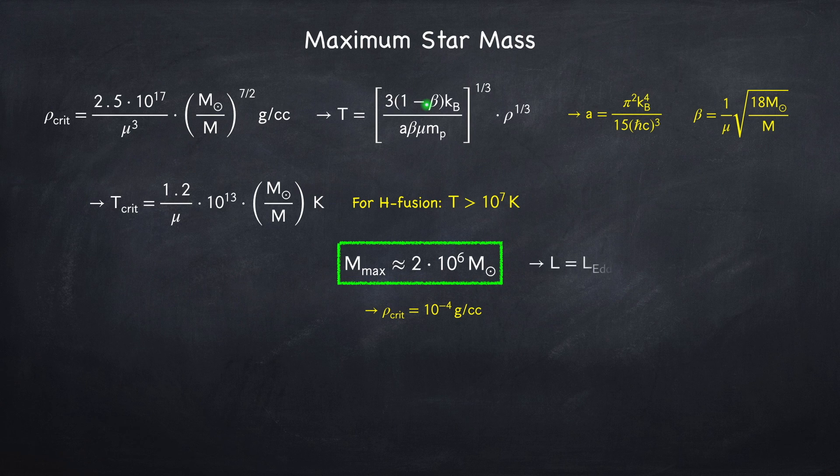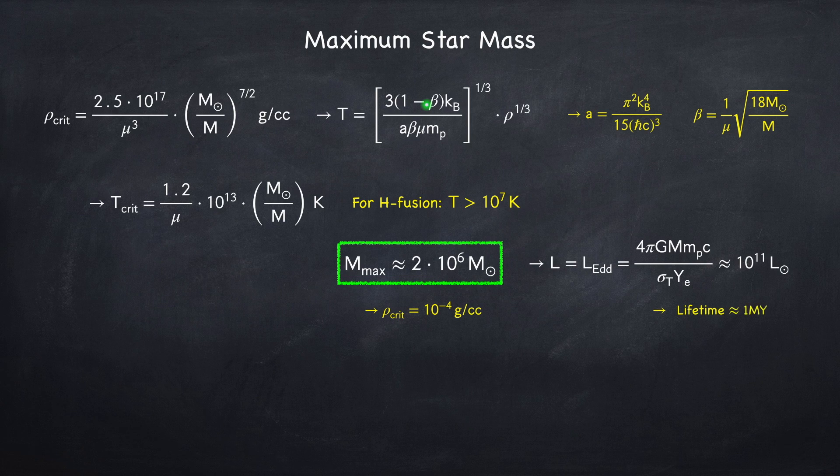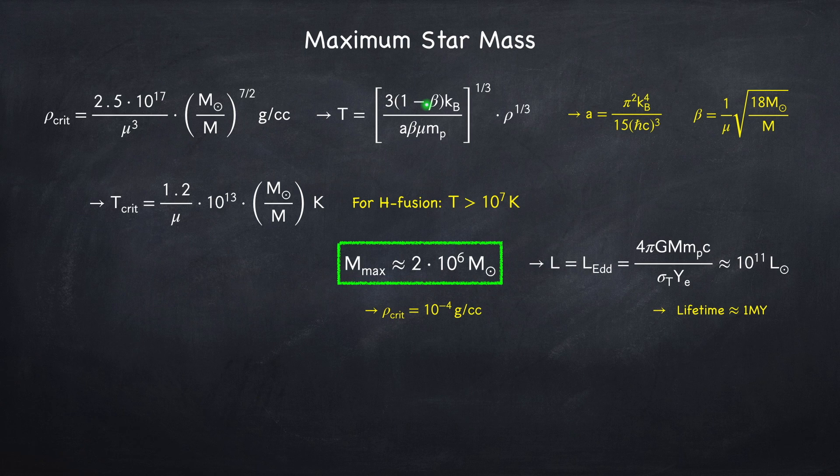The luminosity of this star will be its Eddington luminosity, which comes out to about 100 billion times the luminosity of the sun. From this, it's fairly straightforward to derive the lifetime of this star. I'm not going to do it, but it works out to about a million years, which is very short for a star. The sun, for example, has a lifetime of about 10 billion years.